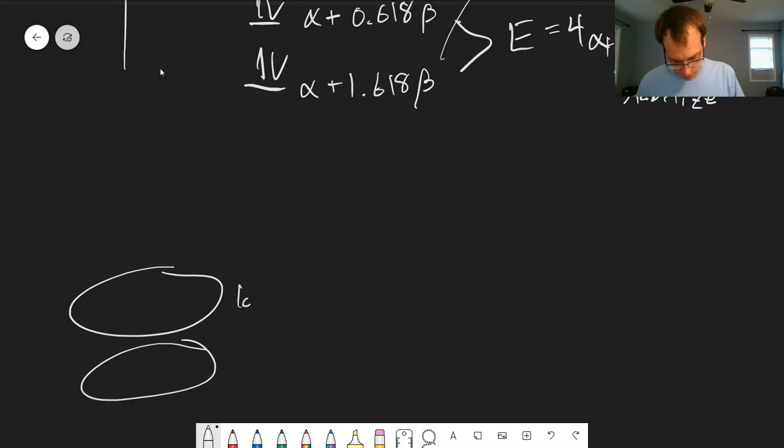So our lowest energy looks like this. The next one will have a node in the middle. So this is the second lowest.